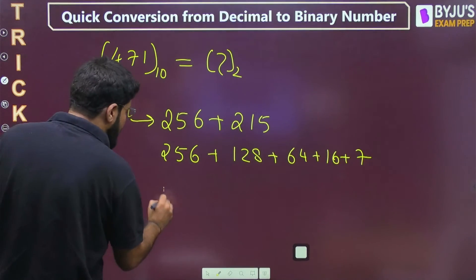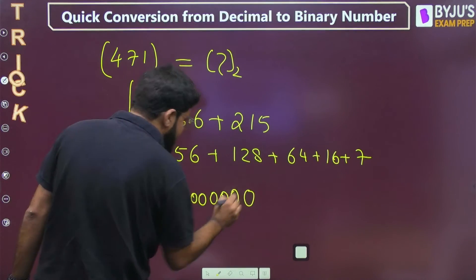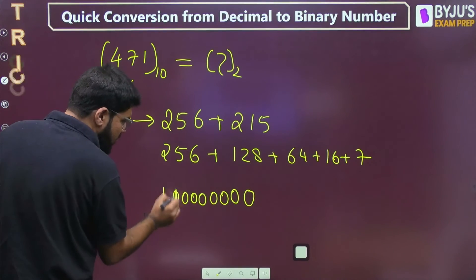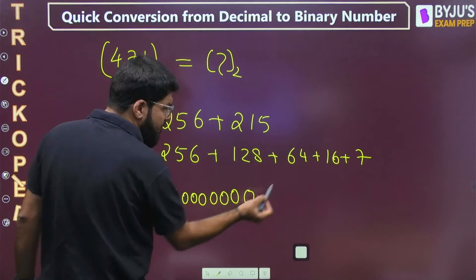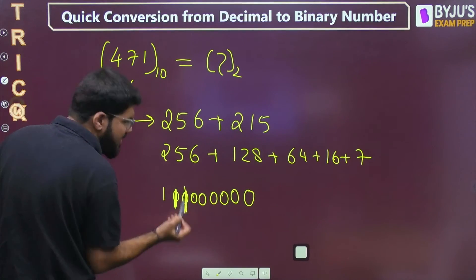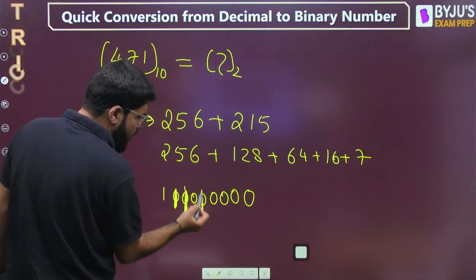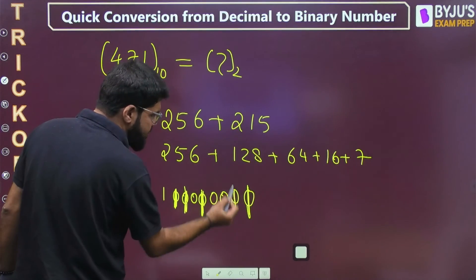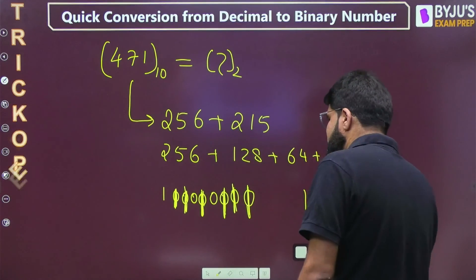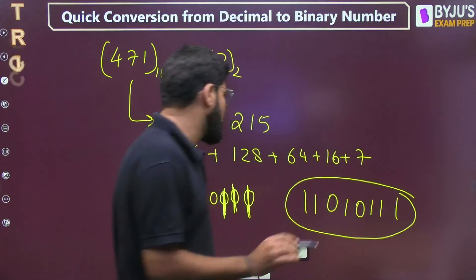256 has 8 zeros. 128 will have 7 zeros, so an extra 1 here leaving the 7 zeros. 64 has 6 zeros, leave the 6 zeros and then a 1. 16 has 4 zeros and a 1. 7 is triple 1, three 1s at the end. So my answer should be 111010111. You check it out: 111010111.